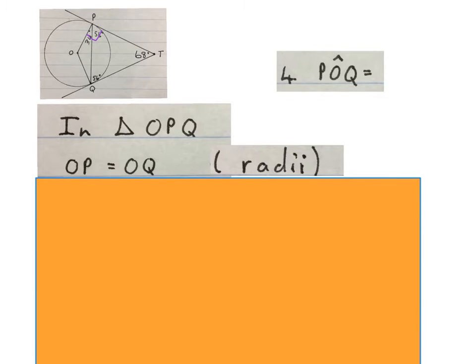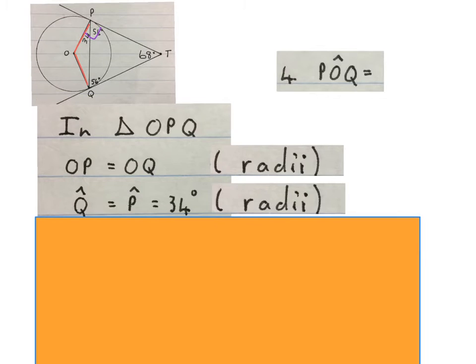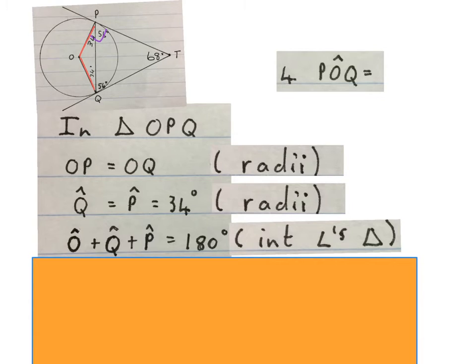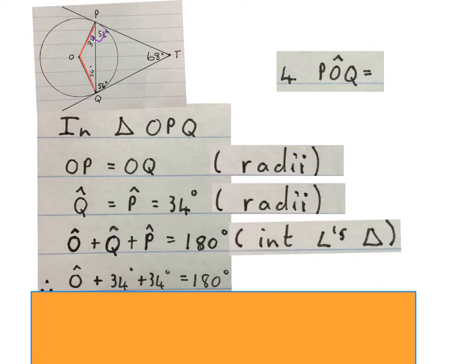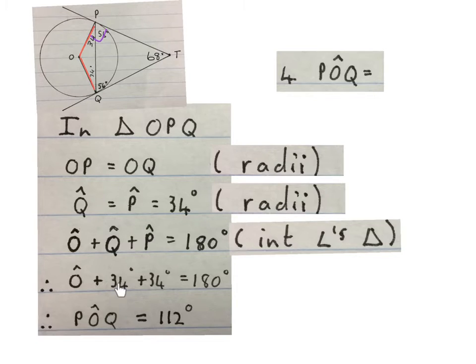OP is equal to OQ because they are radii. Then Q is equal to P is equal to the 34. Now you can write radii here, or angles opposite equal sides. I like this one. And then we write this 34 into the picture. Then we write O plus Q plus P is 180 degrees, interior angles of a triangle. Then we fill in the values that we know. Then we minus the two 34s from the 180. We get the answer POQ, the angle is 112 degrees. And we write it in on the sketch.